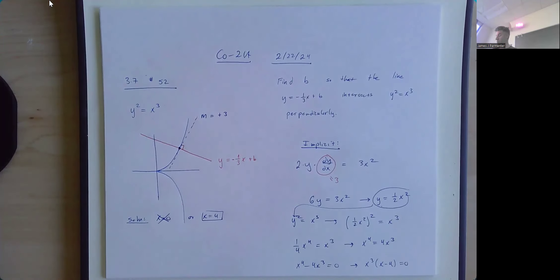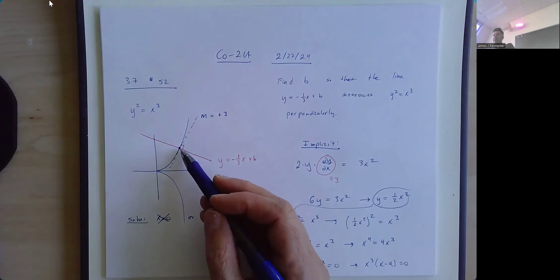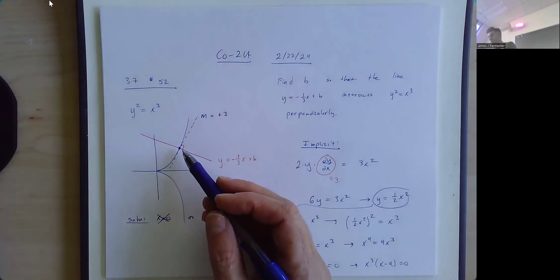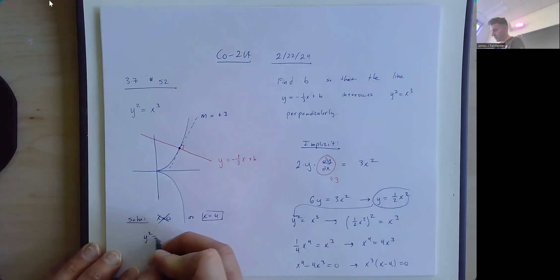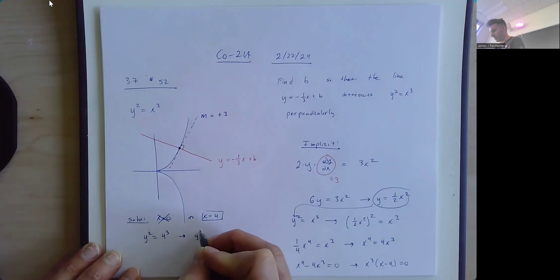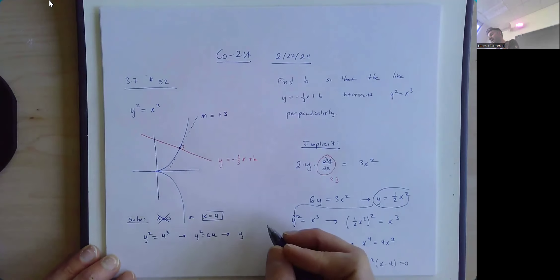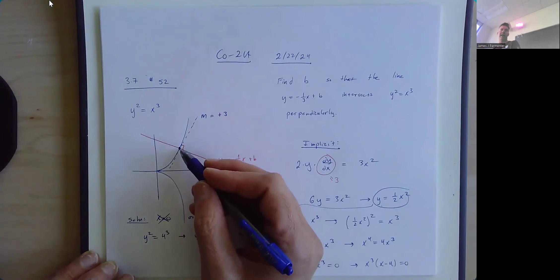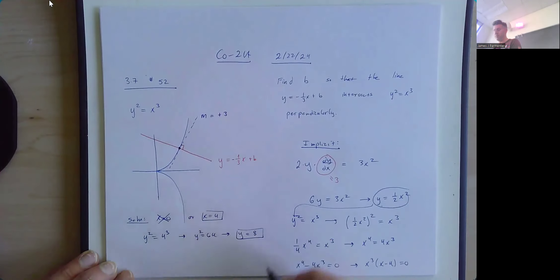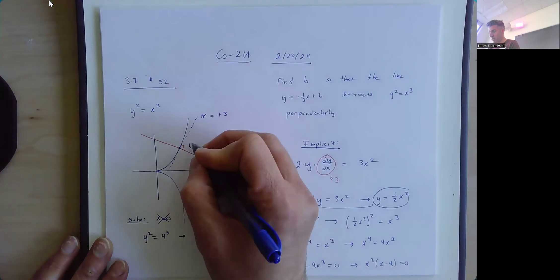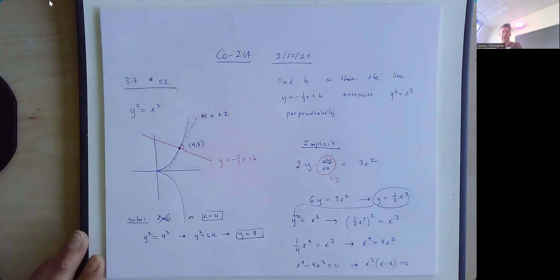If x is 4, we find the y-coordinate. From y squared equal to x cubed: y squared equals 4 cubed equals 64. So y equals plus or minus 8, but we're above the x-axis from the picture, so y equals positive 8. The point of intersection is (4, 8).